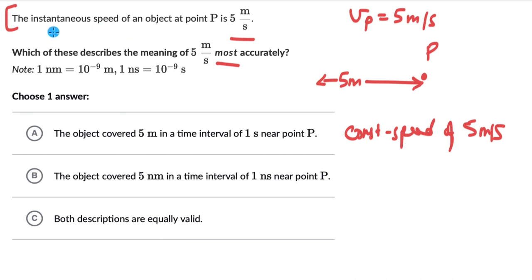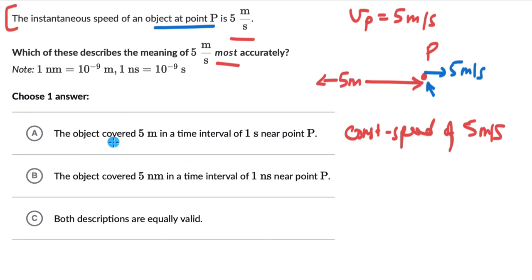We just know the instantaneous speed of an object at point P — just at the instant when the object is at point P, the speed is 5 meters per second. We do not know what the speed is after or before point P. Therefore, we cannot really say that the object will cover 5 meters in a time interval of 1 second. This is not the most accurate description of instantaneous speed being 5 meters per second.